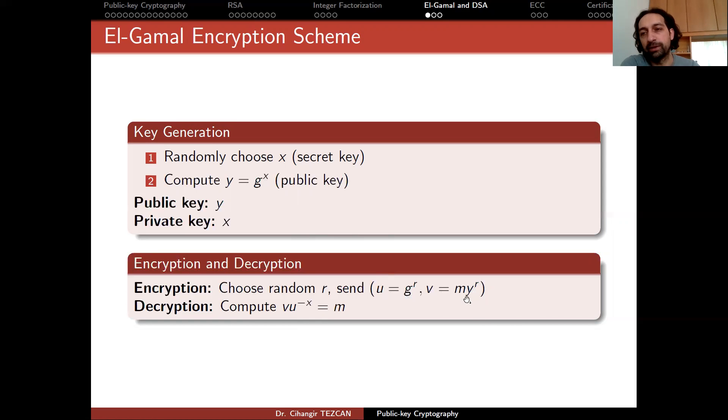So when you subtract XR from XR, you will get G to the power 0, which is 1. So you end up with M.